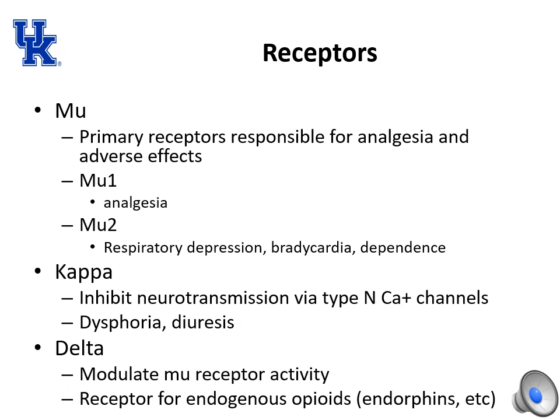The main opioid receptors are mu, kappa, and delta — each with their own subtypes, though only the mu subtypes will be differentiated here. Mu receptors are the primary receptors responsible for analgesia and adverse effects. Mu1 is responsible for analgesia, whereas mu2 is responsible for adverse effects like respiratory depression, bradycardia, and dependence. Kappa receptors inhibit neurotransmission via type N calcium channels and are responsible for dysphoria and diuresis. Delta receptors modulate mu receptor activity and are the receptors for endogenous opioids such as endorphins.